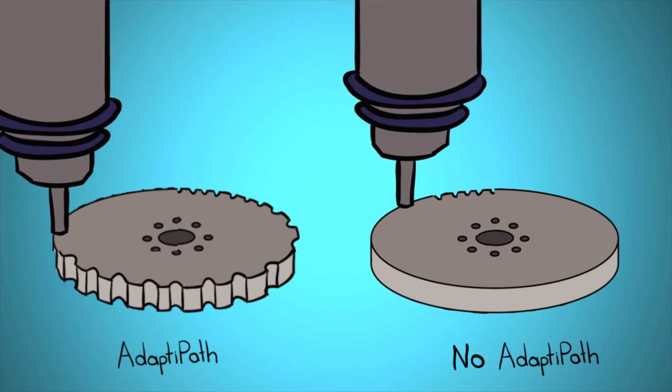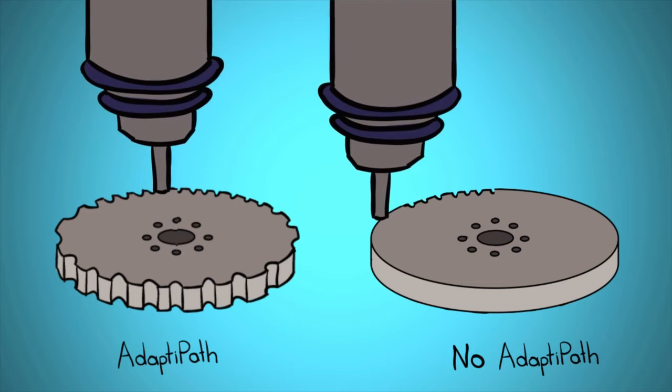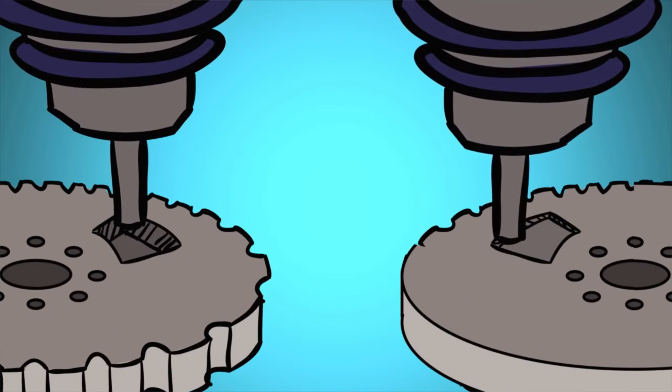That means you can program the tool with higher RPMs, faster feed rates, and even cut pockets at full depth instead of taking small pecks.